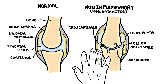There is subchondral sclerosis, where the area below the cartilage becomes hard and compacted. You can also find subchondral cysts, which are fluid-filled sacs within the bone. These changes cause the features we see in a hand and joint of someone with osteoarthritis.